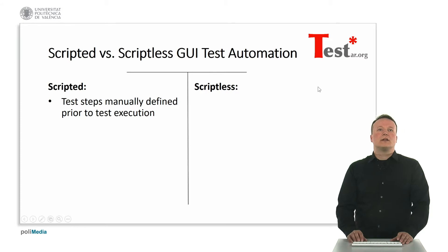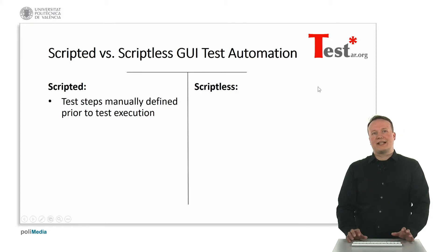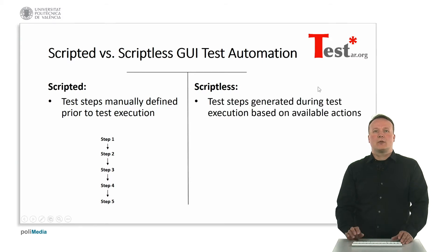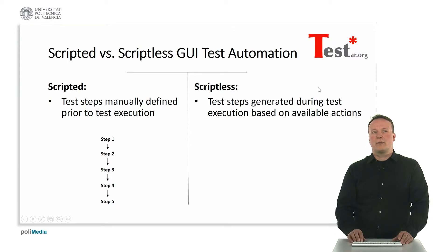In general, in scripted test automation the test steps are manually defined prior to test execution and the steps are sequential, always in the same order. Whereas in scriptless testing, the test steps are generated during the test execution based on what is observed as available actions.